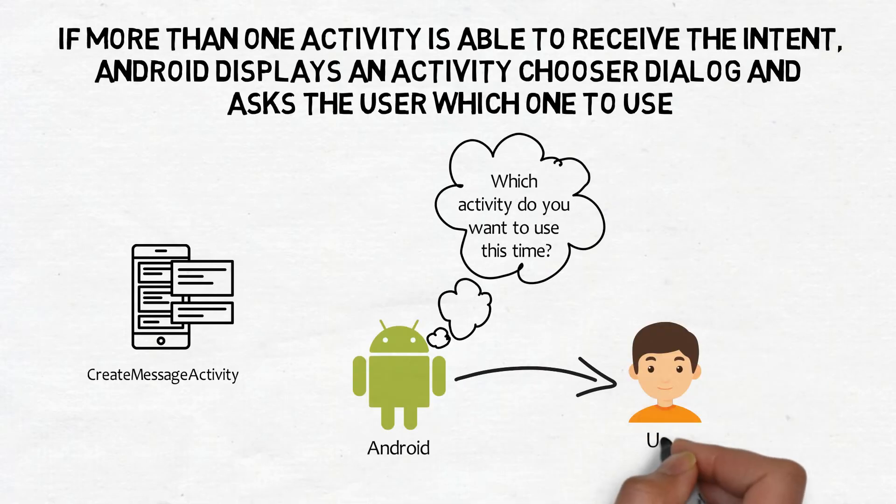If no activities are found, Android still displays the chooser but shows a message to the user telling them there are no apps that can perform the action.